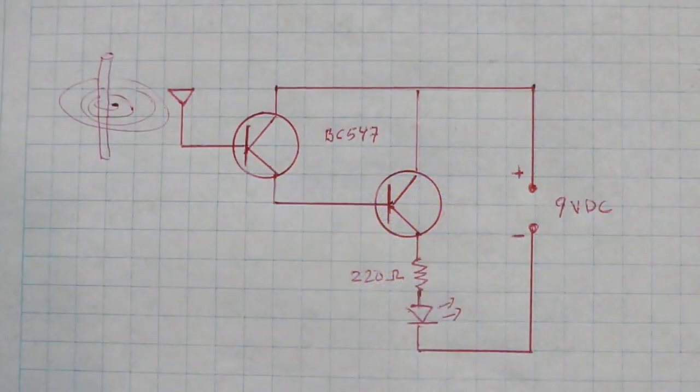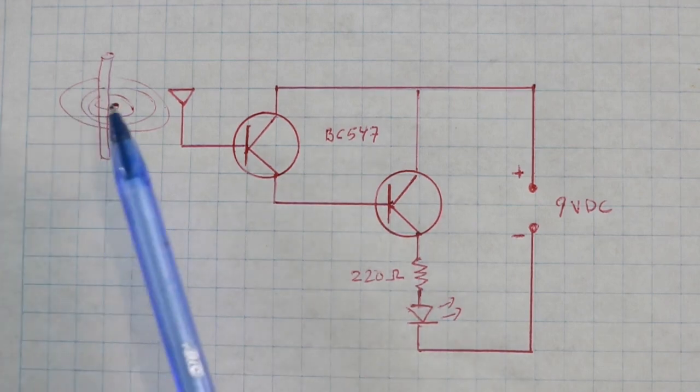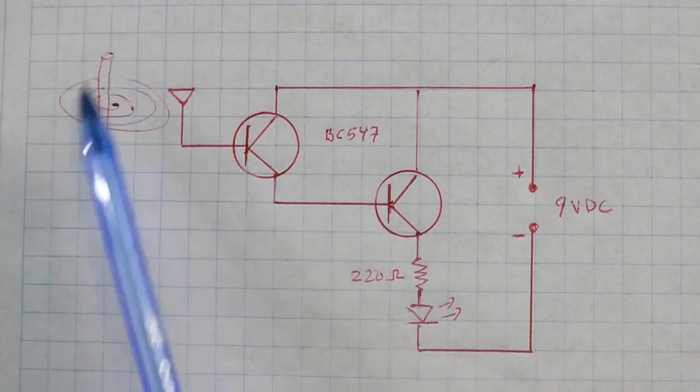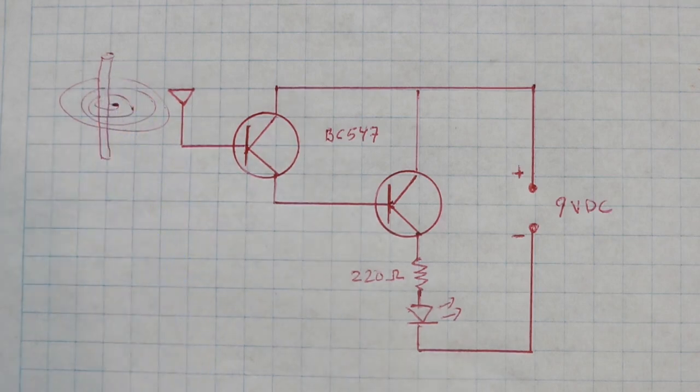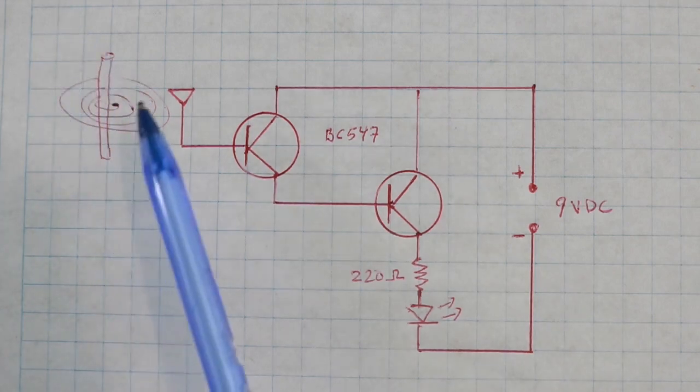The circuit works in a very simple way. What it does is that it amplifies the signals that arise from the wire that carries the alternating current. Since it is AC, there is a magnetic field around the wire.